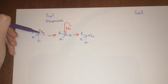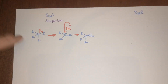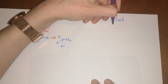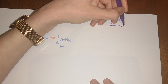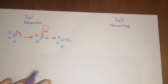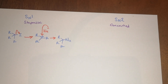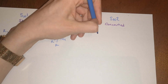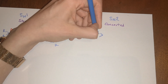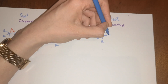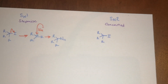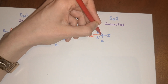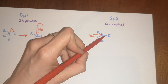In the first step you lose the iodine, and in the next step you add your nucleophile. In contrast to that, SN2 reactions are concerted, and what concerted means is that basically all the arrows are moving around at the same time. So if you take a similar molecule with your iodine, what will happen in this case is your nucleophile will just attack before the iodine has even left.